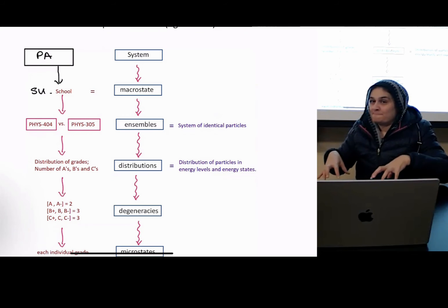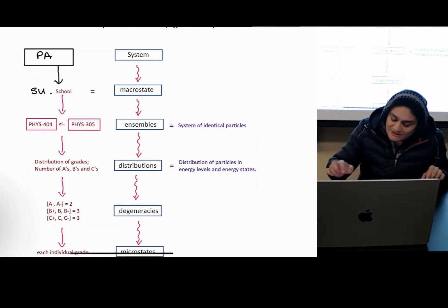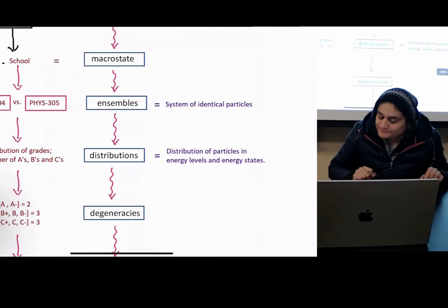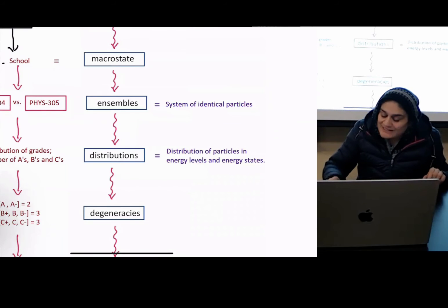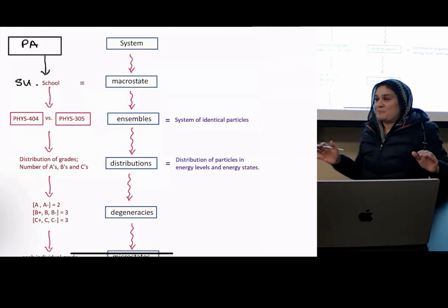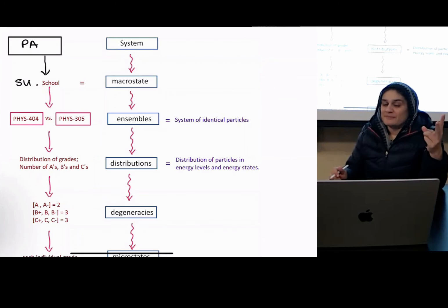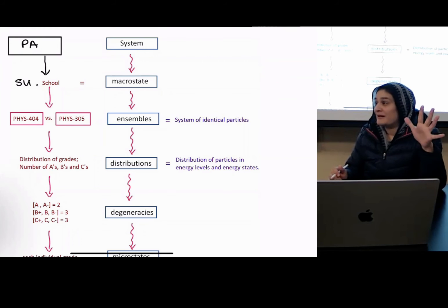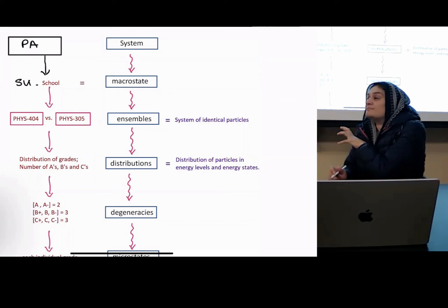Now, some ensembles might be bigger or smaller. Another word we used was distribution. What is a distribution? A distribution is the grades you guys are going to get. There's going to be A's, B's, C's, D's, and hopefully no F's, but there is a likelihood that might happen. In any one of those ensembles, those are the distributions of your grade.